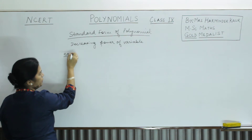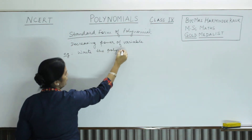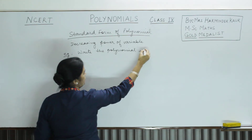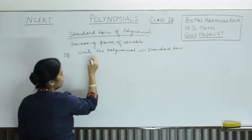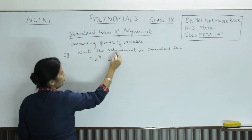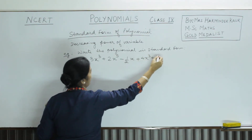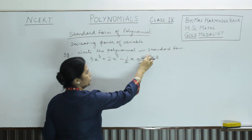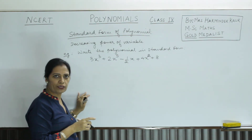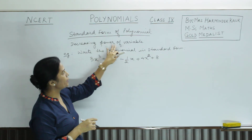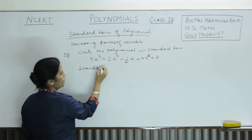For example, suppose a question says: write the polynomial in standard form. The given expression is 3x cubed plus 2x to the power 5 minus half x plus 4x squared plus 8. So some terms are given like this. Now what is the highest power of x? We need to write it in decreasing powers of variable — that is the standard form.